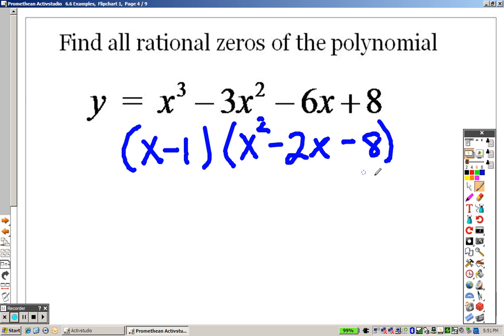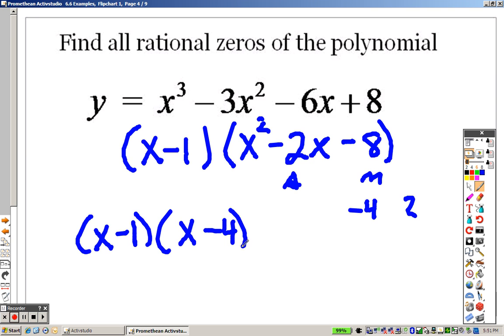And we said that 1 worked when I plugged it in. So that means x minus 1 was the factor. Now I've got to try to factor this. Can you think of two numbers that multiply to give you negative 8 that add to give you negative 2? Well, negative 4 and positive 2. So out in front, I have x minus 1. And when I go to factor this one, I have an x minus 4 and I have an x plus 2. And there are all my factors right there for that problem.